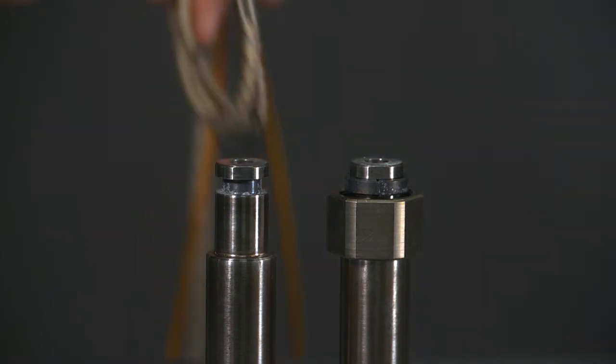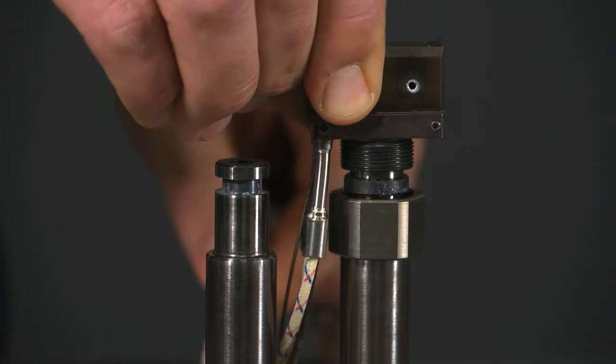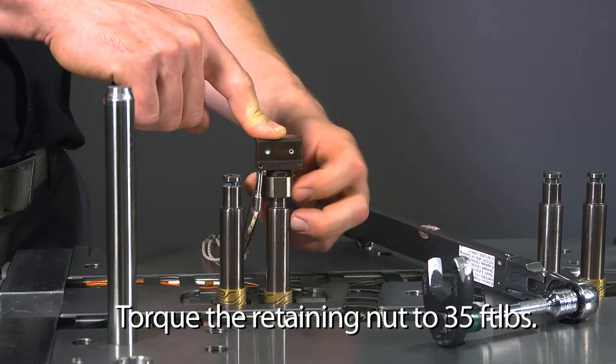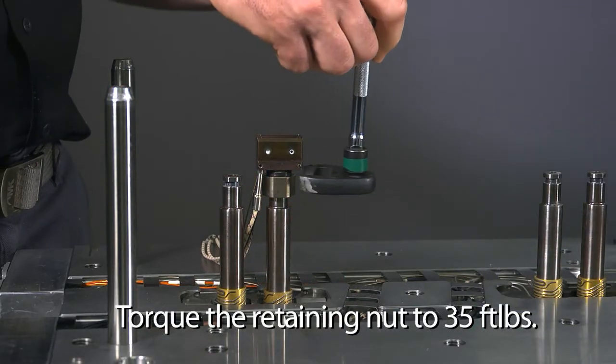Align the flats on the nozzle head to the flats on the nozzle housing and seat the head on the housing. Slide the retaining nut forward and thread onto the nozzle head. Torque the retaining nut to 35 foot-pounds.